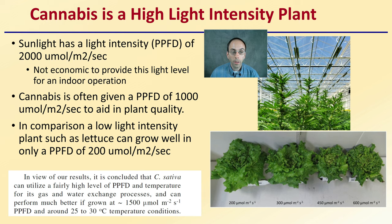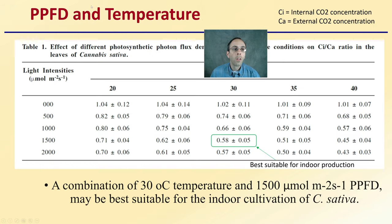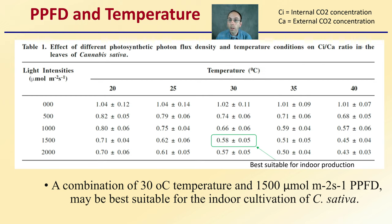In comparison, a low-light-intensity plant such as lettuce can grow well in only 200 micromoles per meter squared per second, and we can see that it produces slightly larger leaves at lower light intensities. This is why it's important to find research on the particular crop of interest. Regarding PPFD and temperature — keeping in mind that CI is internal CO2 concentration and CA is external concentration — researchers found that a combination of 30 degrees Celsius and 1,500 micromoles PPFD may be best suitable for indoor cultivation of cannabis plants, specifically Cannabis sativa. This gives you a target for both light intensity and temperature to maximize yield.